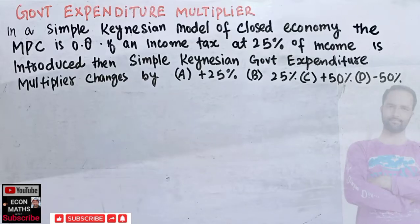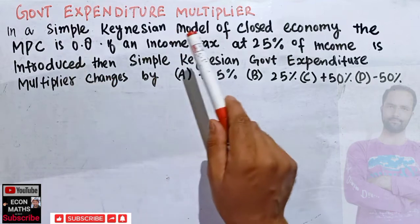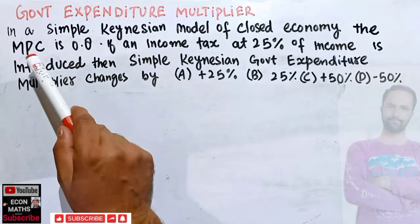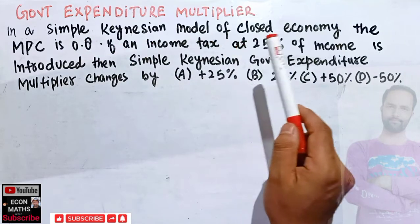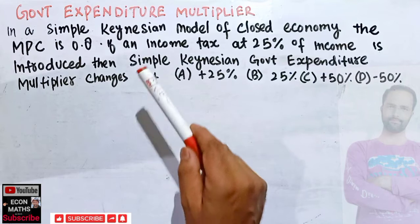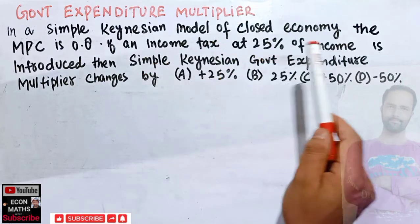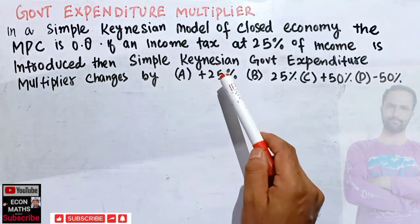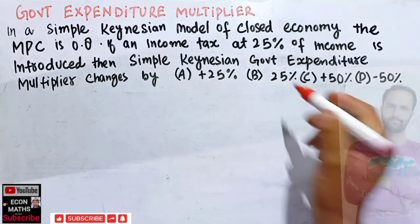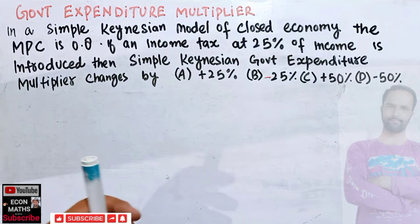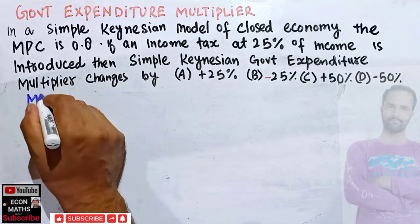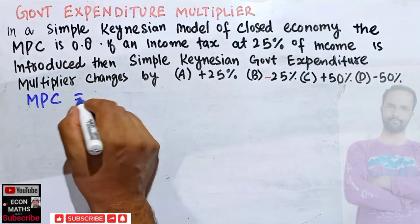In this video we will solve a problem on the government expenditure multiplier. The question is: in a simple Keynesian model of a closed economy, the marginal propensity to consume is 0.8. If an income tax at 25% of income is introduced, by how much does the simple Keynesian government expenditure multiplier change? The options are +25%, -25%, +50%, or -50%.